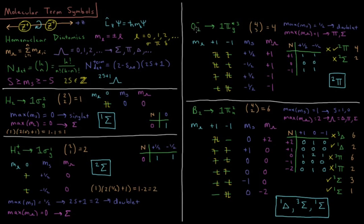This is shown in our O2 minus example, where the only partially filled subshell is 1 pi g star to the third power. How many different ways are there to arrange 3 electrons in 4 spin orbitals? That's 4 choose 3, which equals 4. We build those 4 determinants here. For m sub s, we get plus and minus one half for each case.